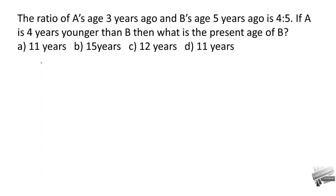Another age-related problem: the ratio of A's age three years ago to B's age five years ago is 4 to 5. This is similar to the last question with a variation — the time references are different for each person. A's age three years ago was 4x, so the present age is 4x plus 3. B's age five years ago was 5x, so present age is 5x plus 5.